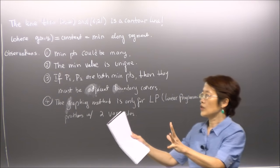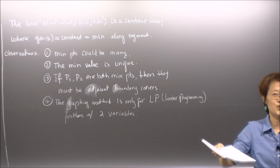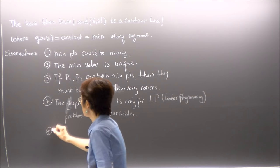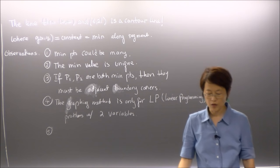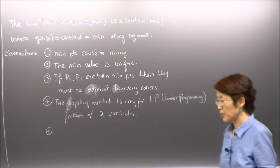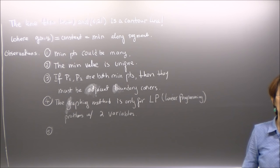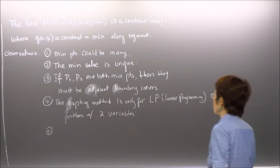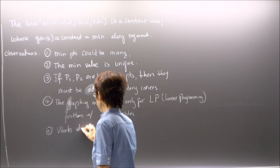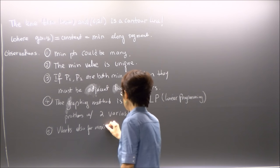Observation five: the two examples we've seen are both minimization problems, but the same approach works for maximization as well. Instead of a cost function, if you have a profit function, you want to maximize it — the same method applies.